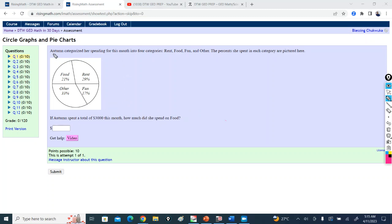So here, let's solve this question now. It says, Autumn categorized her spending for this month into four categories: rent, food, phone, and others. The percent she spent in each category is pictured here. So food is 21%, rent is 29%, phone is 17%. So now look at the question. It says, if Autumn spent a total of $3,000 this month, how much did she spend on food?